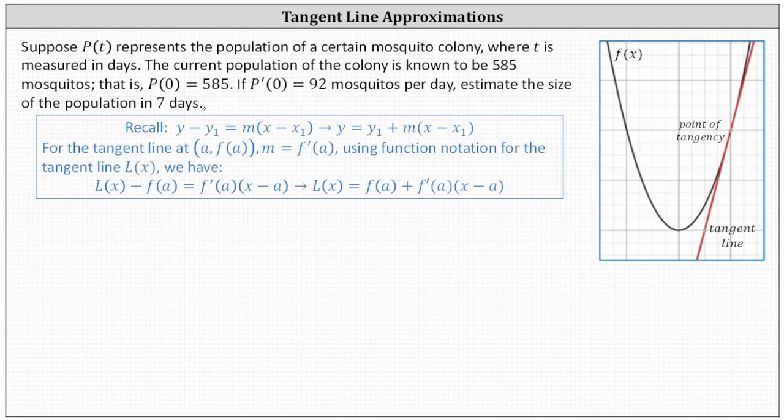Looking at the graph on the right, we have a function in black and a tangent line in red. Notice near the point of tangency, the tangent line is a good approximation for the function values for f of x.